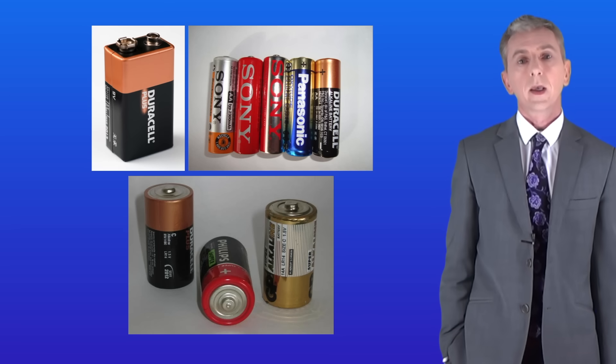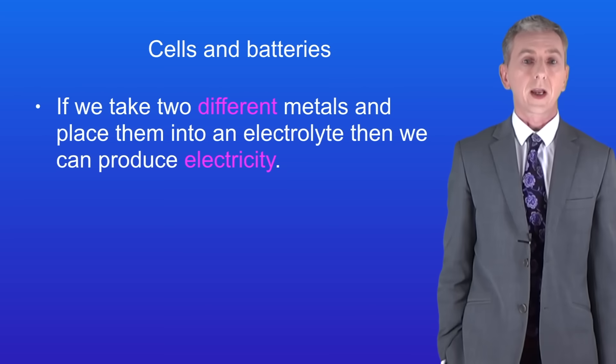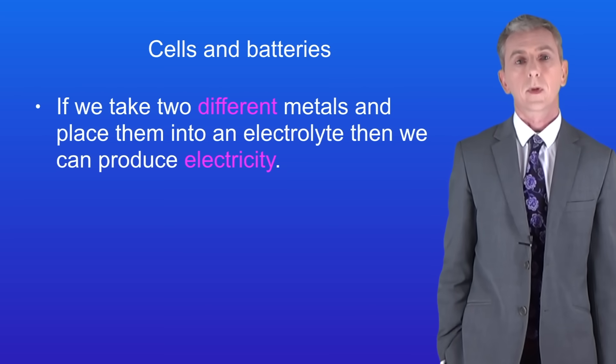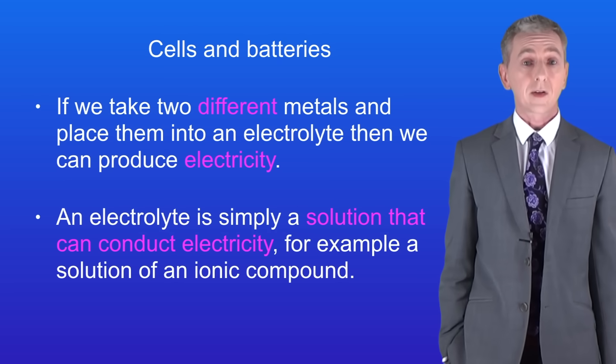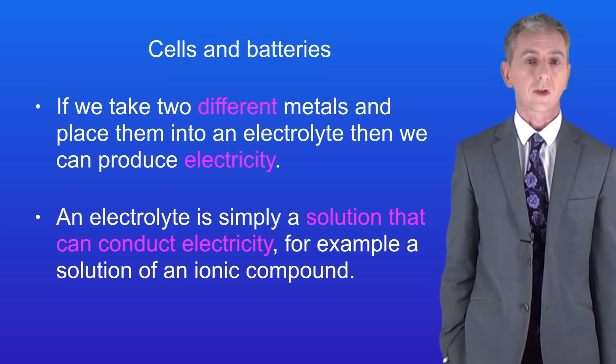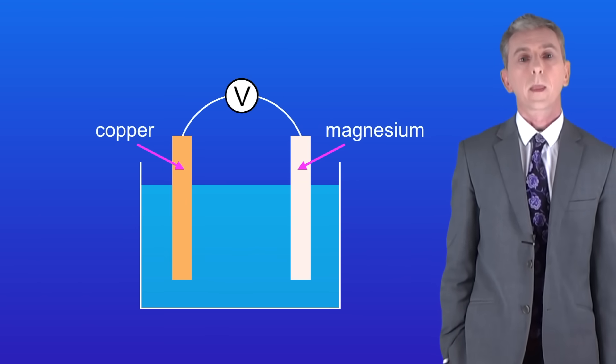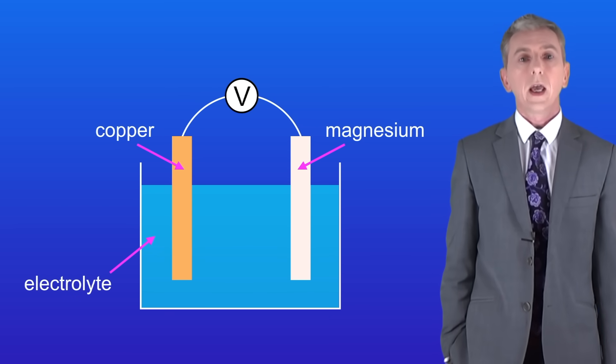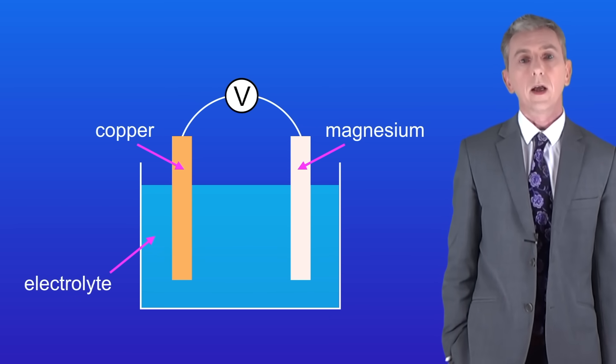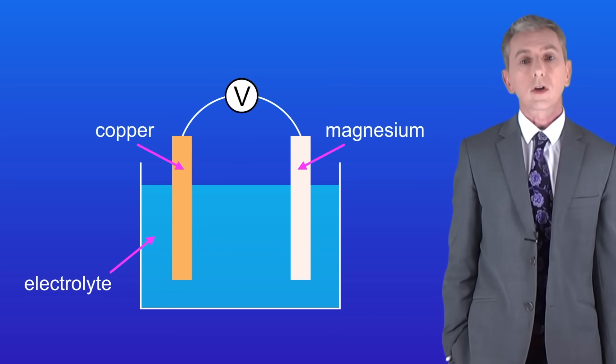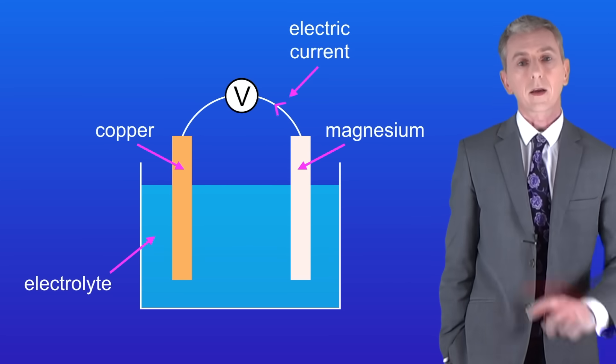Here's the first key idea. If we take two different metals and place them into an electrolyte then we can produce electricity. An electrolyte is simply a solution that can conduct electricity, for example a solution of an ionic compound. I've got here a strip of copper and a strip of magnesium and I've placed these two metals into an electrolyte solution. If I connect the two metals with a voltmeter then I will see a potential difference or voltage between them and an electric current will flow through the wire.